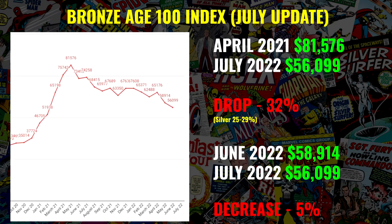Let's zoom in to 2022 and talk more specifically about this last calendar year. The peak value of the index was in April 2021, and looking at the current value in July 2022 — how much have we fallen? In terms of cash flow going into these top 100 books, in April 2021 the index was at $81,576. Now in July it's $56,099. That equates to a drop of 32 percent. From the high of 2021 down to where we are today, the Bronze Age has dropped 32 percent, compared to the Silver Age which dropped more around 25 to 29 percent. So the Bronze Age has had a somewhat more sizable correction overall.